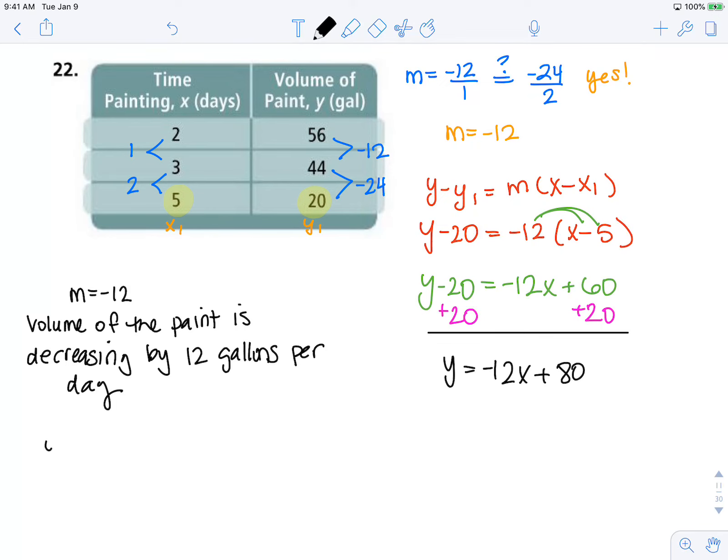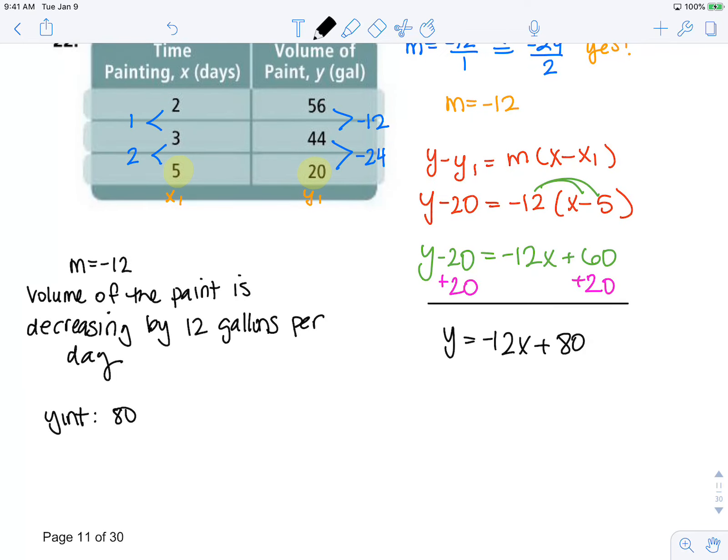And we know our y-intercept is 80. So that means at x equals 0 days, there are 80 gallons of paint.